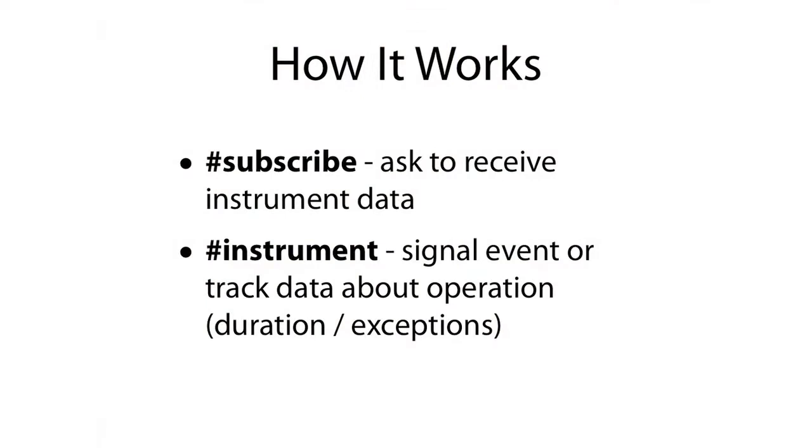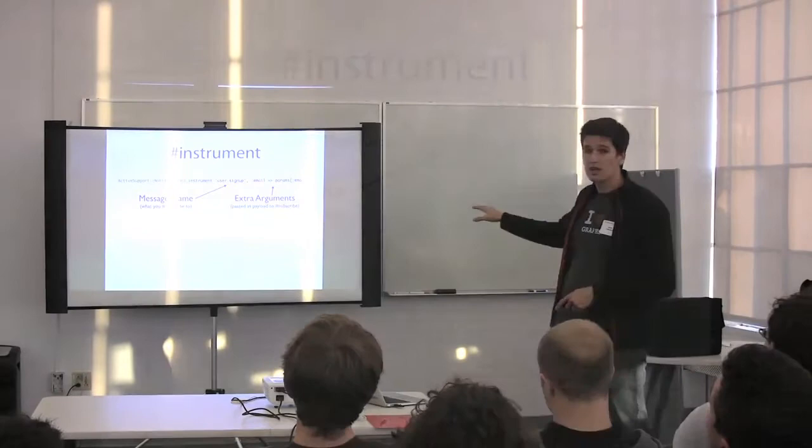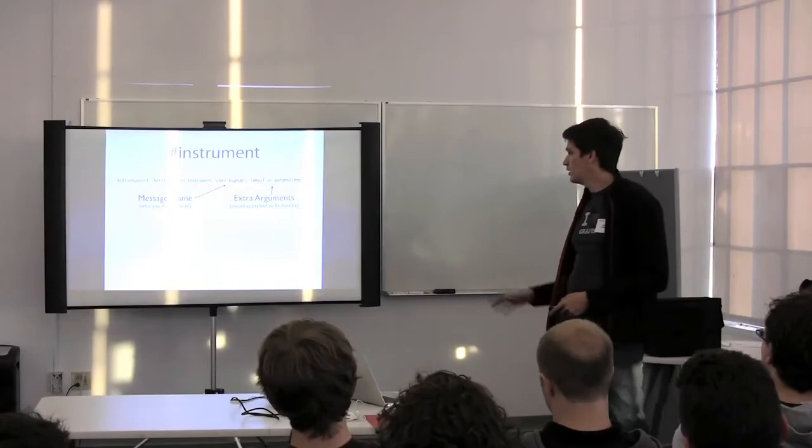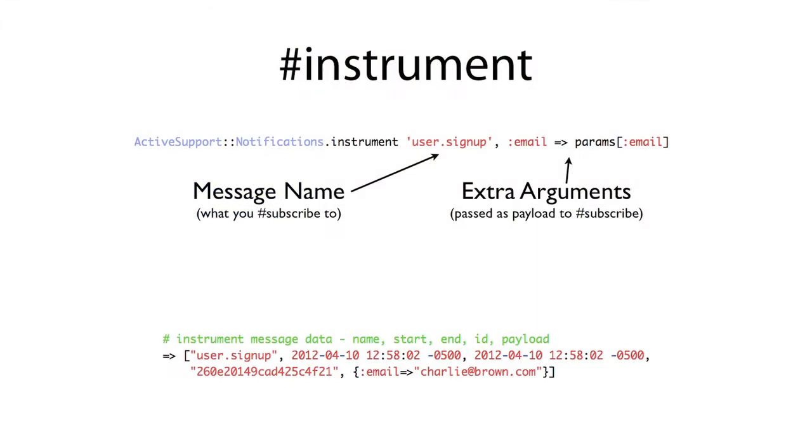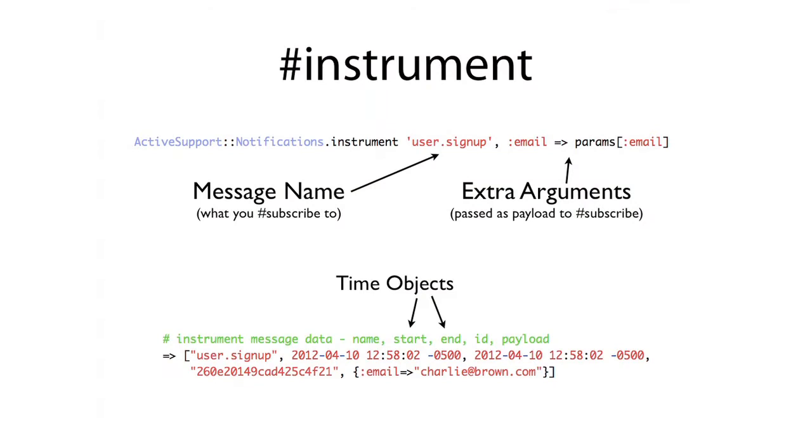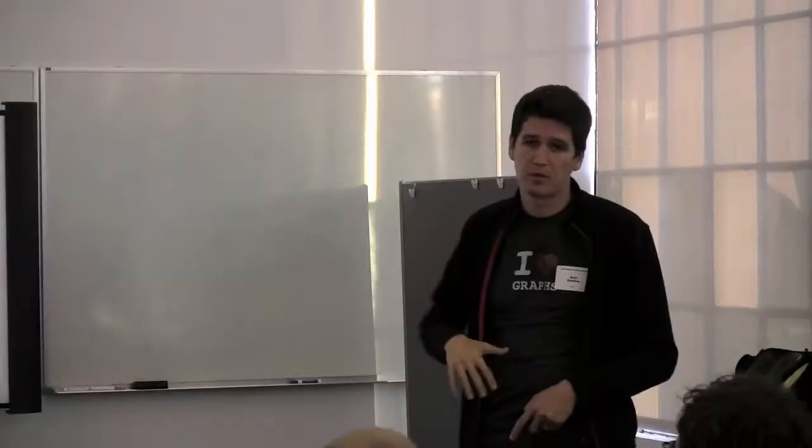There's two core concepts: setting up subscribers and sending instrument messages to those subscribers. The way instrumentation works, you've got the message name, then you can pass anything else you want as extra arguments after that. Those extra arguments become the payload that subscribers receive. There's a lot of flexibility in what you can pass. This is an example of what the actual payload is. You've got the message name, a start time, an end time, which for a simple instrumentation like this will be the same. The fourth argument is a unique transaction ID the system uses internally. For the most part, you can ignore that. The fifth argument is really the money one—that's the payload, all the stuff we've passed to this event, and all the subscribers get a copy of that.